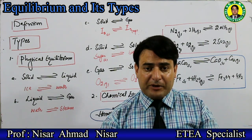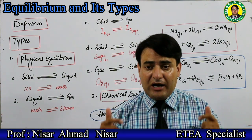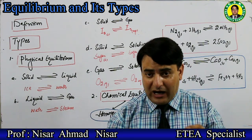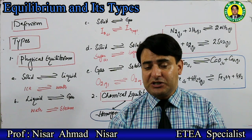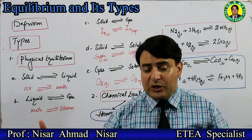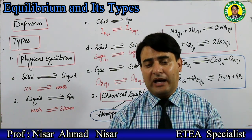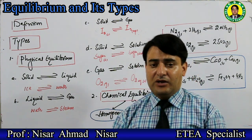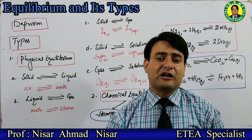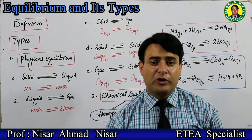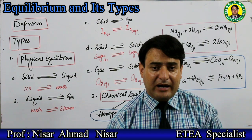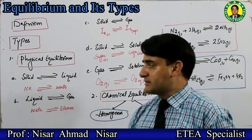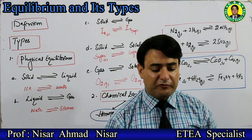In a physical process, there is a stage where the same chemical species are involved and two opposing phenomena occur at equal rate. That stage is called physical equilibrium. The stage in a physical phenomenon where two opposing phenomena occur simultaneously at equal rate is called physical equilibrium.